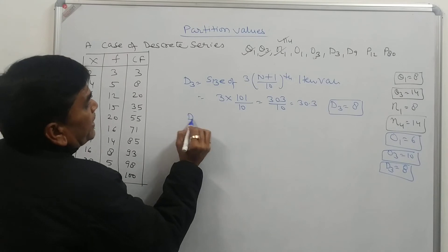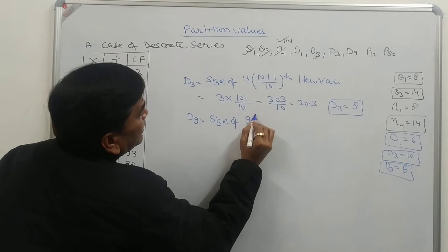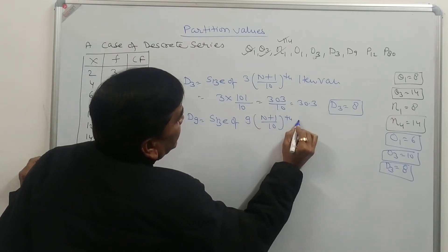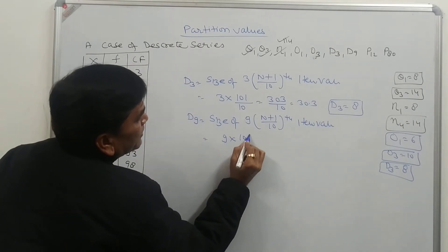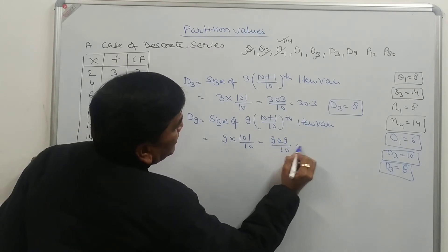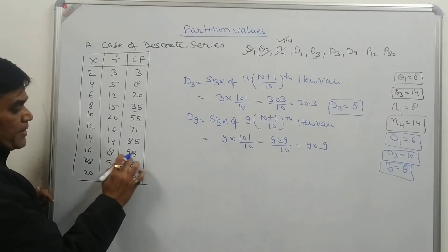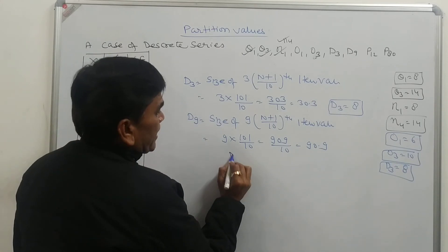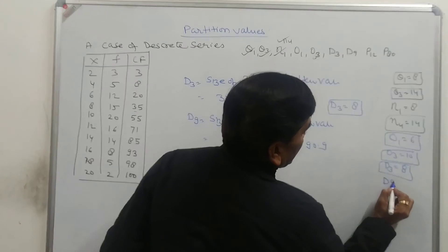D9 value is equal to the size of 9(N+1)/10th item value. So 9×101/10 = 909/10 = 90.9. 90.9 first includes in CF 93, so the value of D9 will be 16. D9 is equal to 16. Very simple.